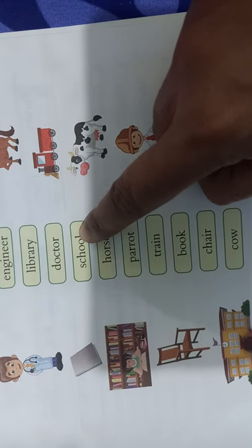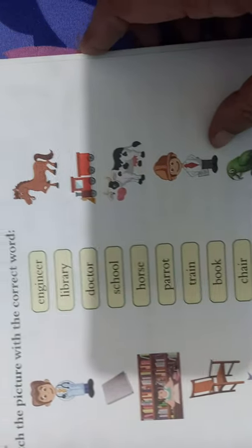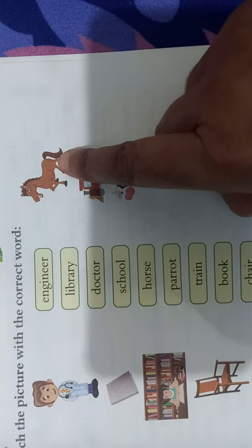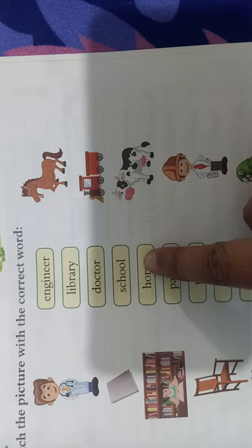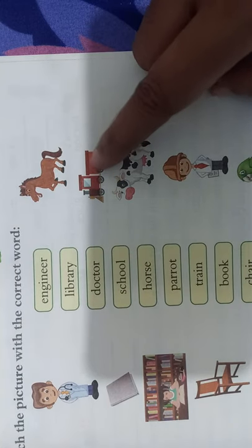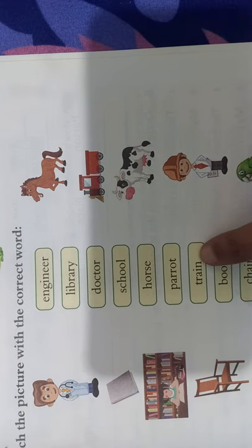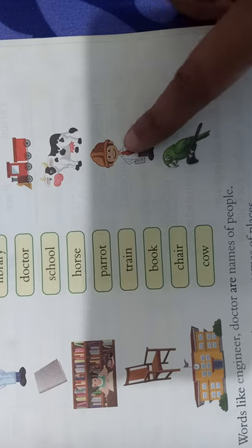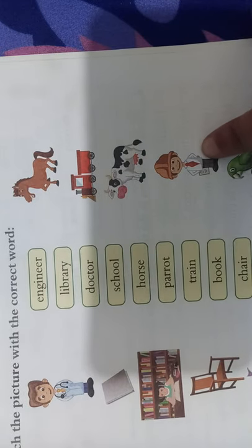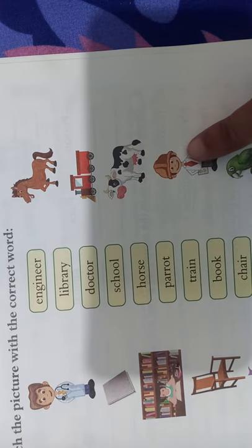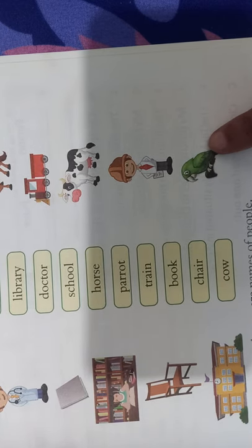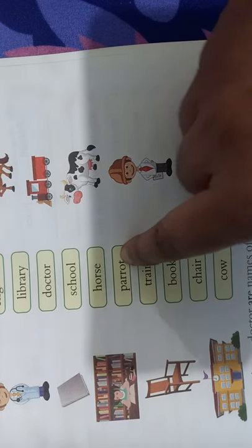You have to match school. The next we have is, what is this children? Horse. Horse is the name of an animal. Horse is also a noun. Train. Noun. Cow. Again, name of an animal. And cow is a noun. There is an engineer here. Match the word engineer. And what is this? A bird. What is the name of the bird? Parrot. That's right. So match parrot.